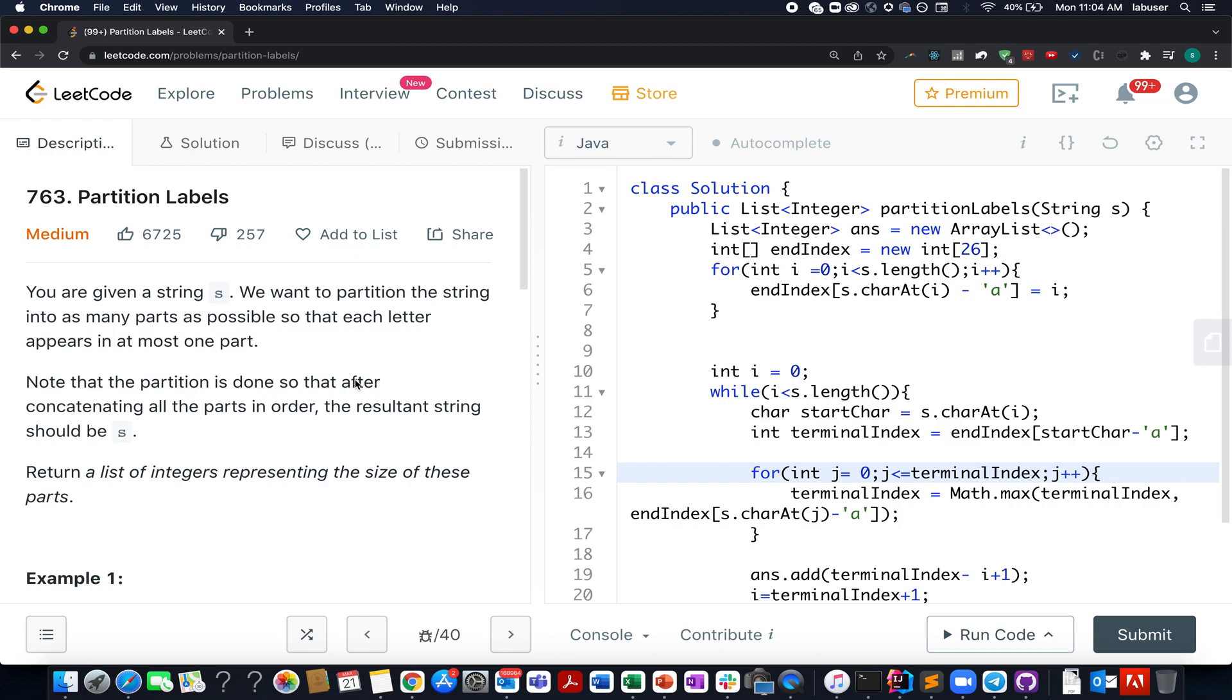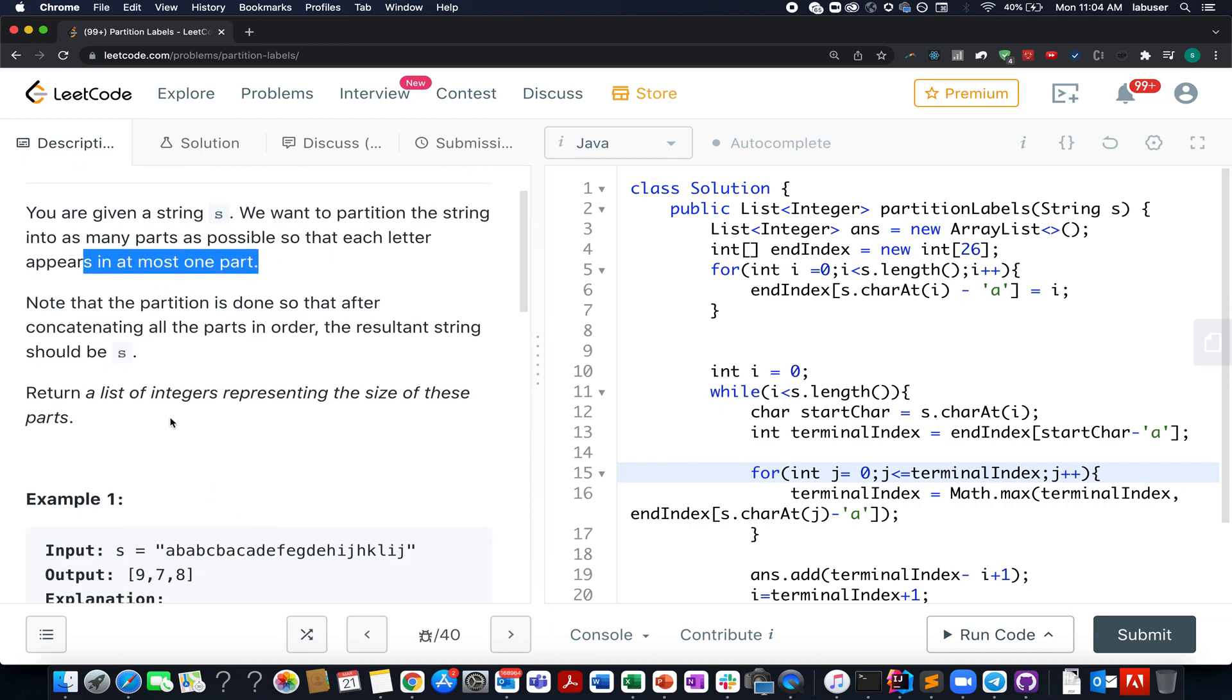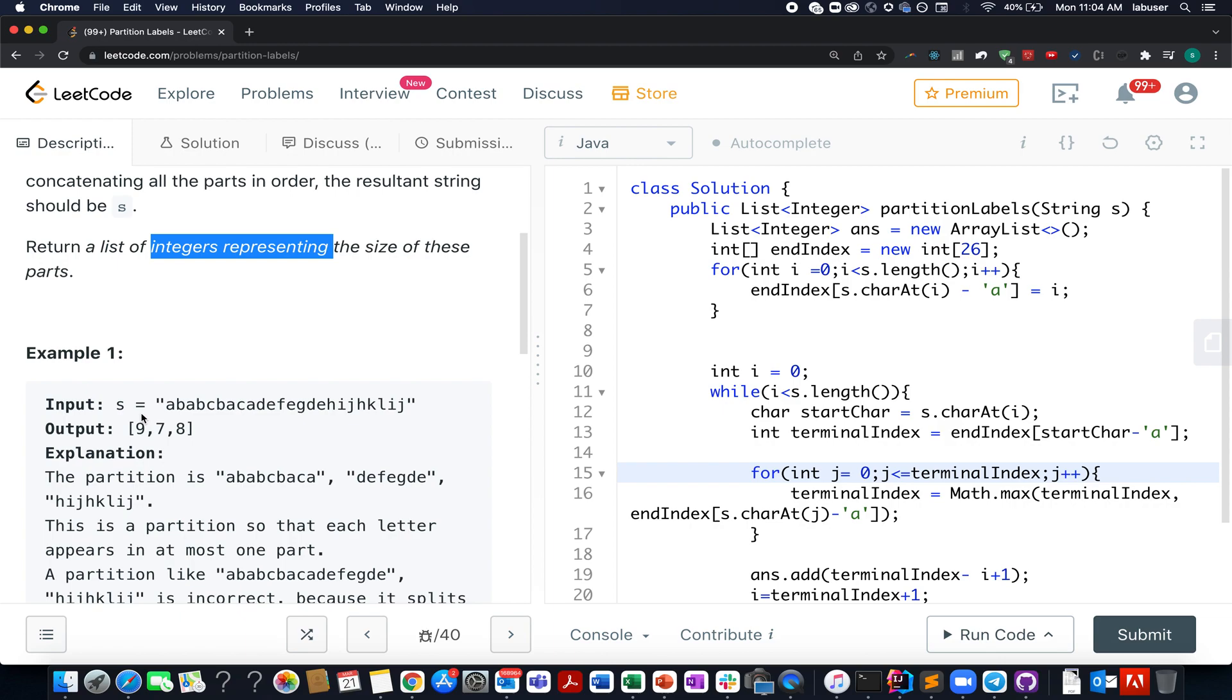In this question we are given a string and we need to divide this string into various parts such that each character appears in at most one single part. You can't have a character belonging to multiple parts, and we need to return the list of integers representing the size of these parts.